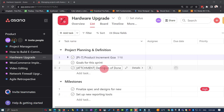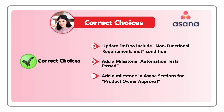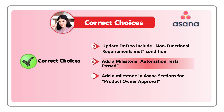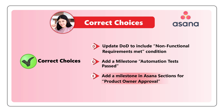Based on everything I shared, I believe the correct answers are choices D — update definition of done to include non-functional requirements met condition — choice G — add a requirement for automation tests passed — and choice E — add a milestone in Asana sections for product owner approval. Do you have a better way to solve this question? Please post your answers and rationale in comments so we can all learn.